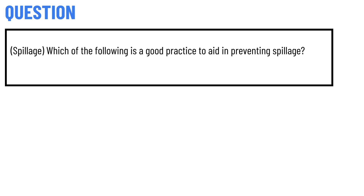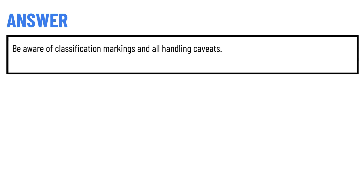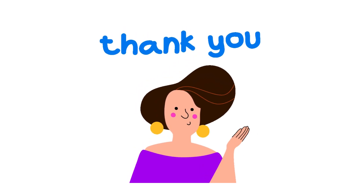Today's question is about spillage. Which of the following is a good practice to aid in preventing spillage? The correct answer is: be aware of classification markings and all handling caveats.